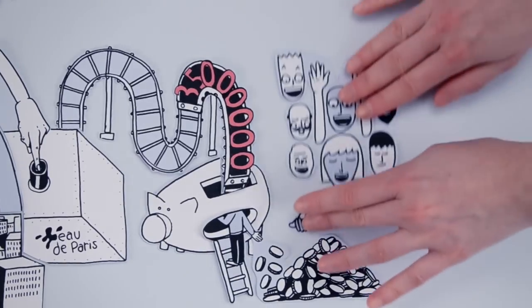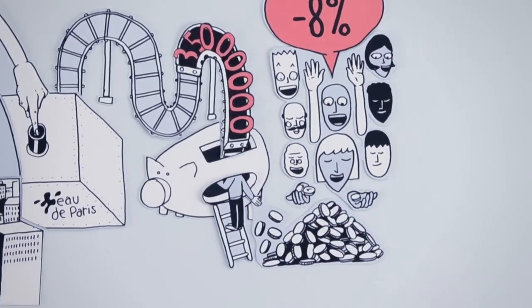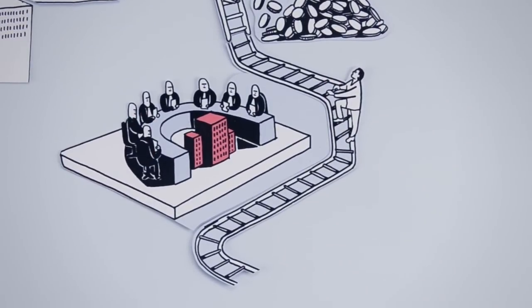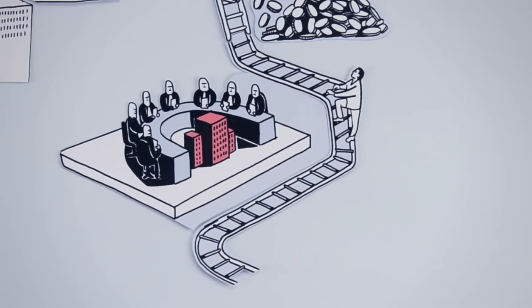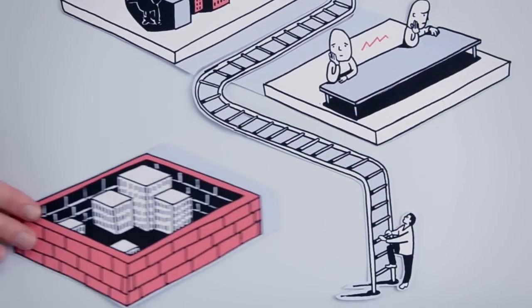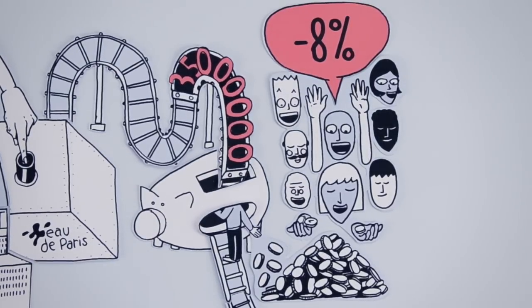As a result, water tariffs were reduced by 8%. But it was not an easy process. The multinationals lobbied hard and took the city to court. Information technology transfer was a challenge. Relations between unions were tense, and some city departments resisted change. But despite these obstacles, the transition was a success.